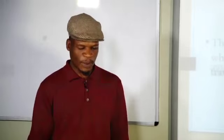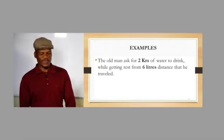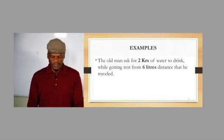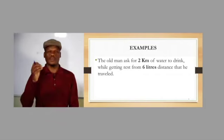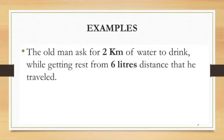For example: the old man asked for two kilometers of water to drink while he was getting rest from the six liter distance he had traveled. You would notice that two kilometers cannot measure liquid, and six liters cannot measure distance. If you swap those around, it makes sense: two liters of water and six kilometers of distance traveled.